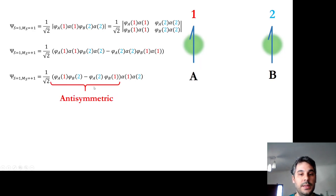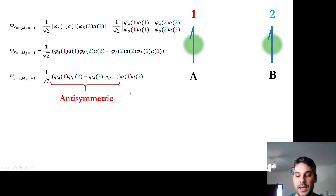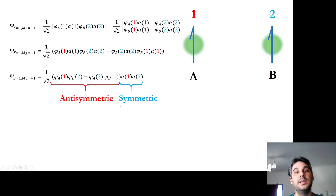We then get one part of the total function that depends only on spatial variables and another part that depends only on spin variables. The spatial part, containing only the orbitals, is anti-symmetric — it acquires a minus sign when you exchange labels 1 and 2. The spin part is symmetric. The product of a symmetric times an anti-symmetric function is anti-symmetric, so it fulfills the anti-symmetry requirement. A triplet is therefore an eigenfunction of the S² operator.